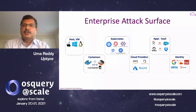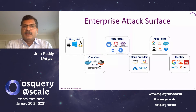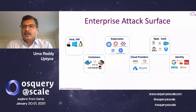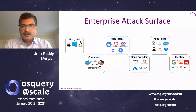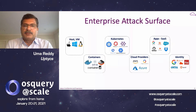Now, most enterprises use SaaS applications like G Suite, Dropbox, and GitHub. They also use identity providers like Okta, Ping, and Auth0 — all of these extend your attack surface. Any misconfiguration in any of these surfaces is going to be trouble and would be an opening for an attacker.